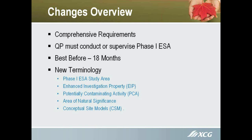Some of the new terminology: the Phase 1 ESA study area, which Albert alluded to, is now a minimum 250 meters from the property boundary. The CSA standard used to be 250 meters from the middle of the property. Now it's referenced to the property boundary — you have to go 250 meters in all directions. It could even go beyond that if there is a potentially contaminating property within that 250-meter radius.